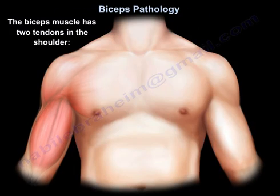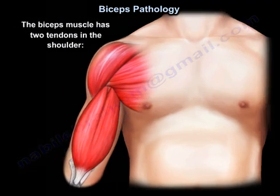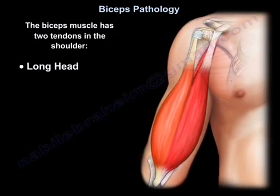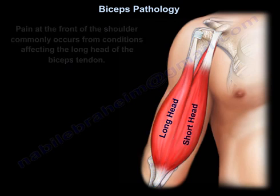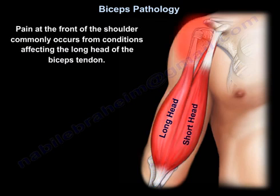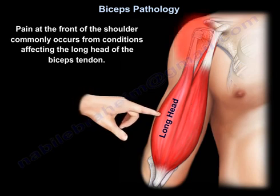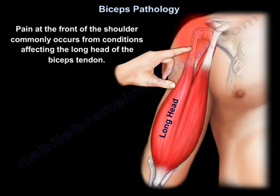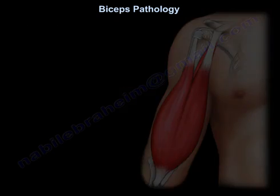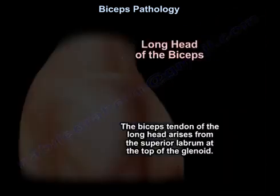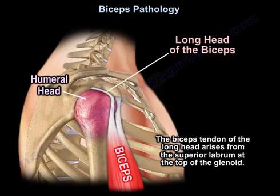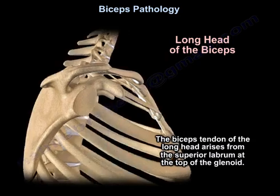Biceps pathology. The biceps muscle has two tendons in the shoulder: the long head and the short head. Pain at the front of the shoulder commonly occurs from conditions affecting the long head of the biceps tendon. The biceps tendon of the long head arises from the superior labrum at the top of the glenoid.